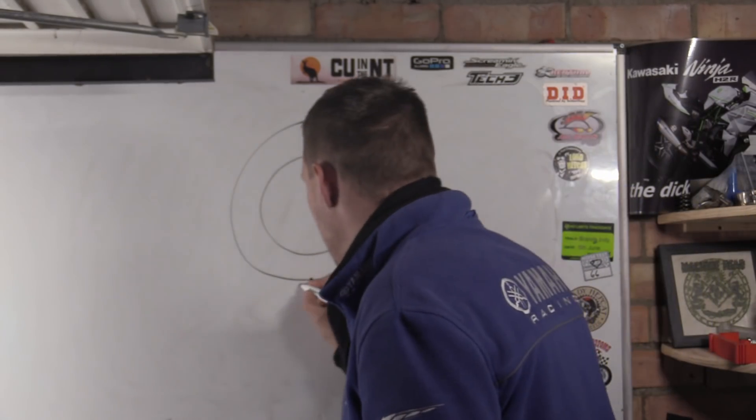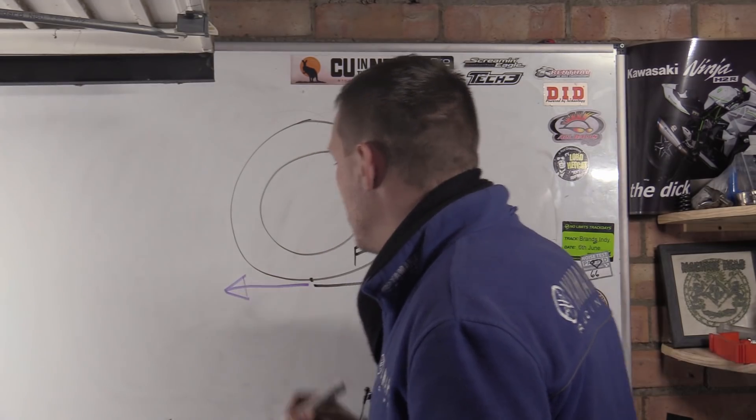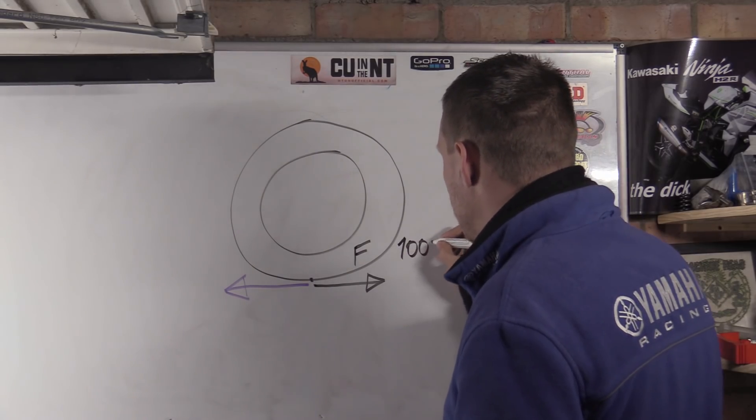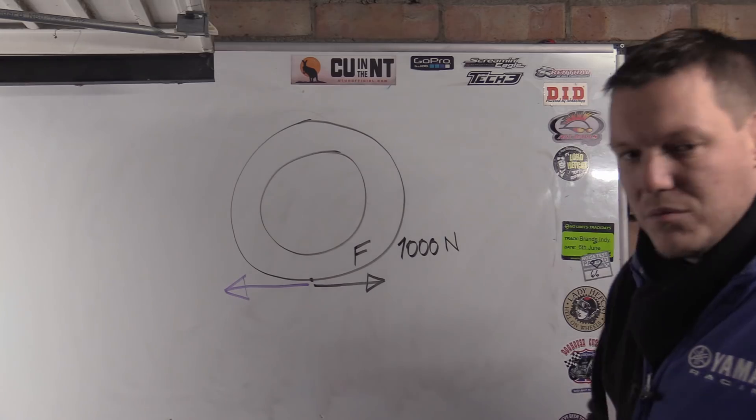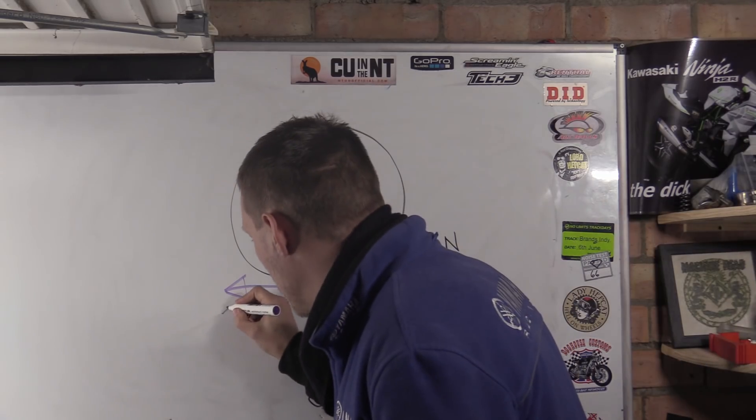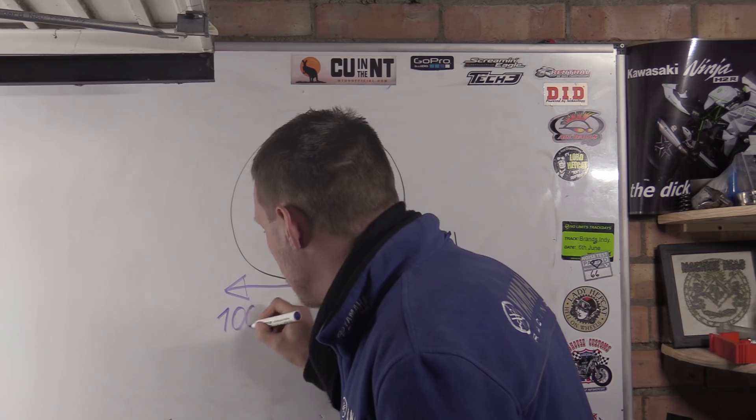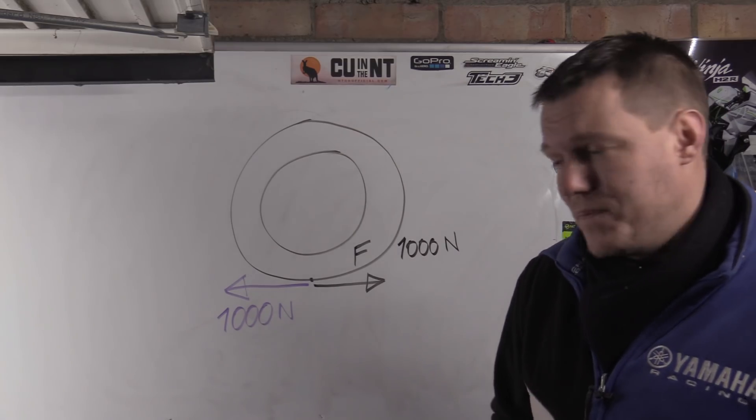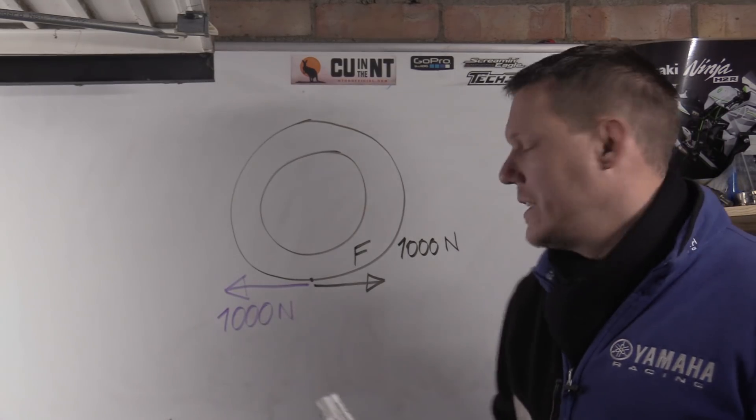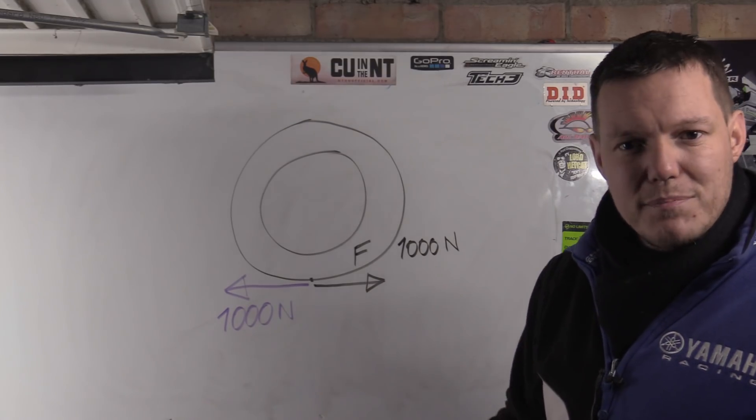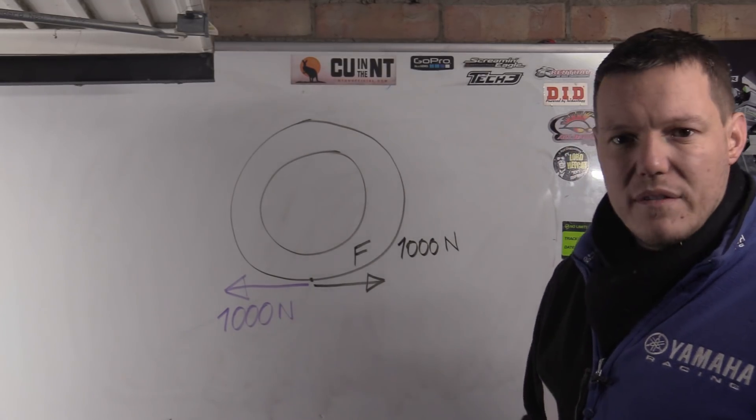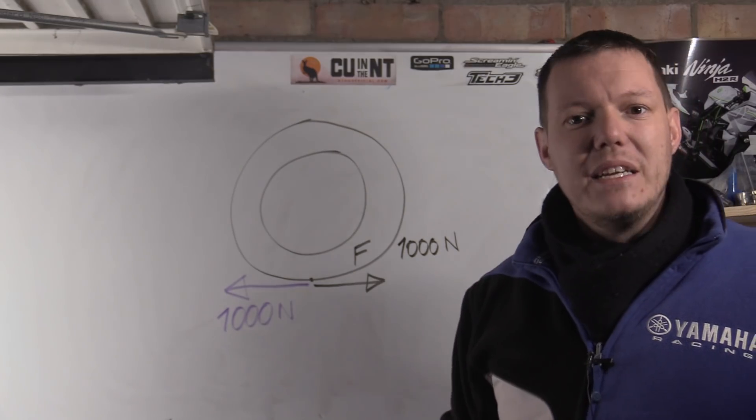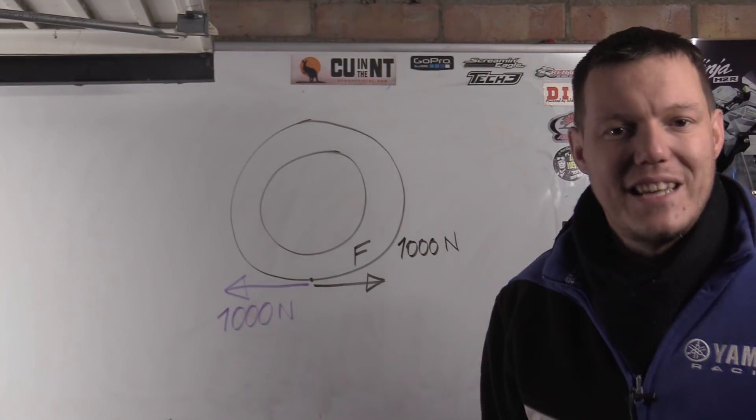So that's our force and here's our equal and opposite force. So what that means is, let's just say that this force here is a thousand newtons. Right? Let's just say this is a thousand newtons. That means this reactionary force, the opposing force, is a thousand newtons in completely the opposite direction, along the same plane. So you know, literally 180 degrees.